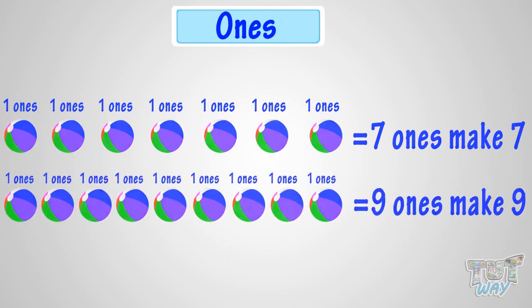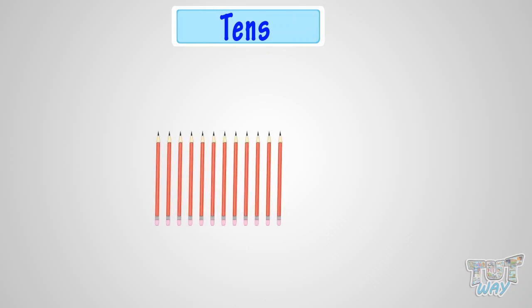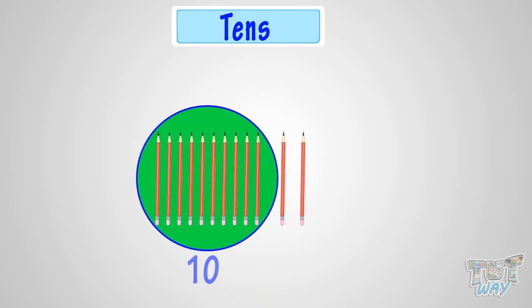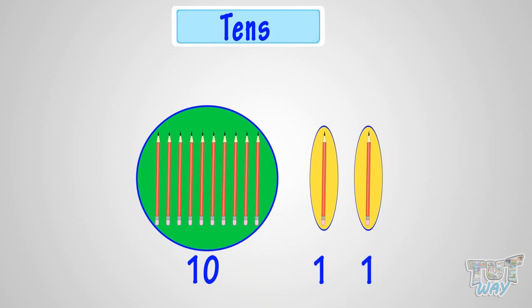Good! Now, let's learn the concept of tens. Okay, how many pencils are these? These are twelve pencils. You can say, there is one set of ten pencils and two sets of one pencil each. Or, there is one ten and two ones in twelve.